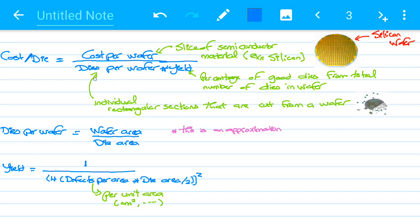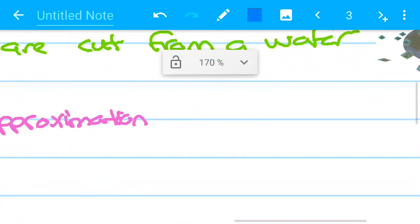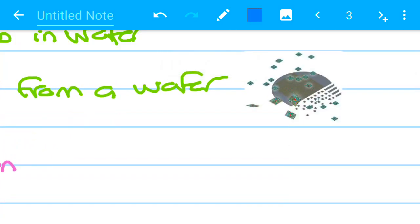So dies per wafer. What are really dies? Dies are the individual rectangular sections that are cut from a wafer to form our chips. If we zoom in here we find that these small cuts are the dies.